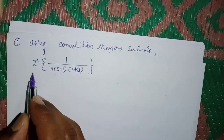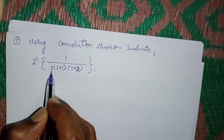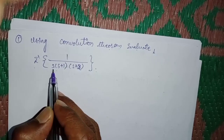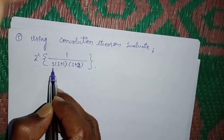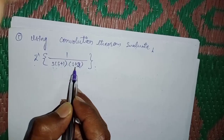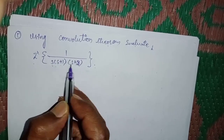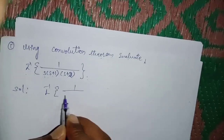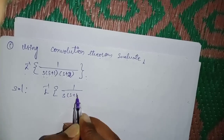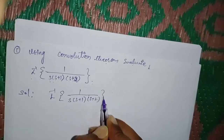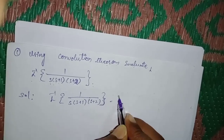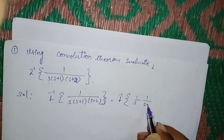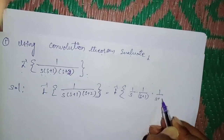Using the convolution theorem, evaluate L inverse of 1 upon s into s plus 1 into s plus 2. Observe that the denominator has three factors: s, s plus 1, and s plus 2 — these are non-repeated factors. So first write down the given question as L inverse of 1 by s into 1 by s plus 1 into 1 by s plus 2.